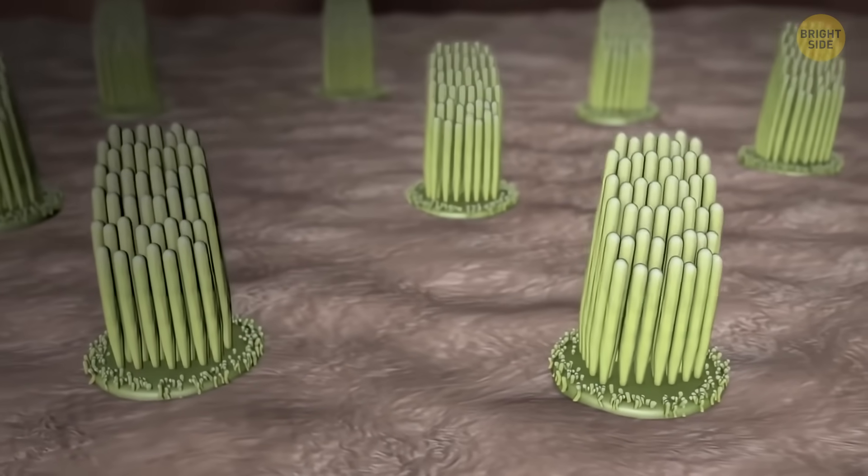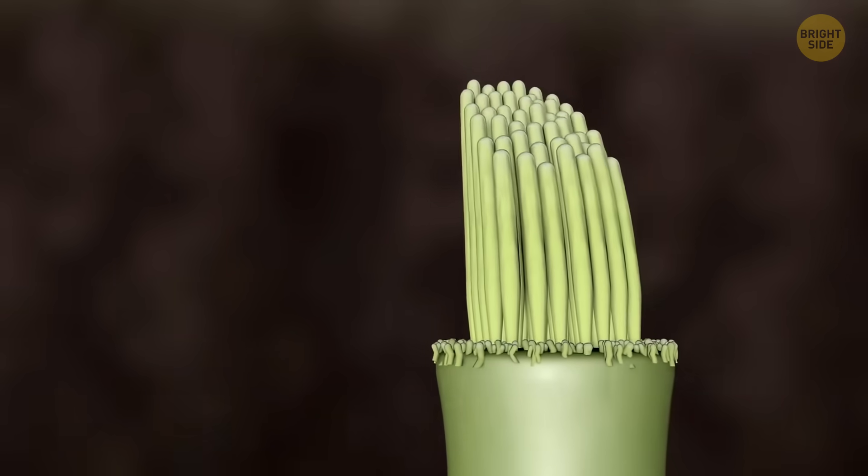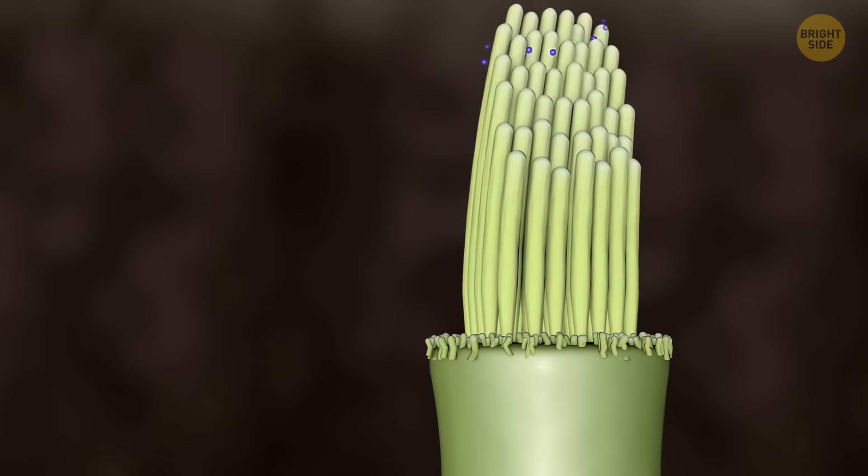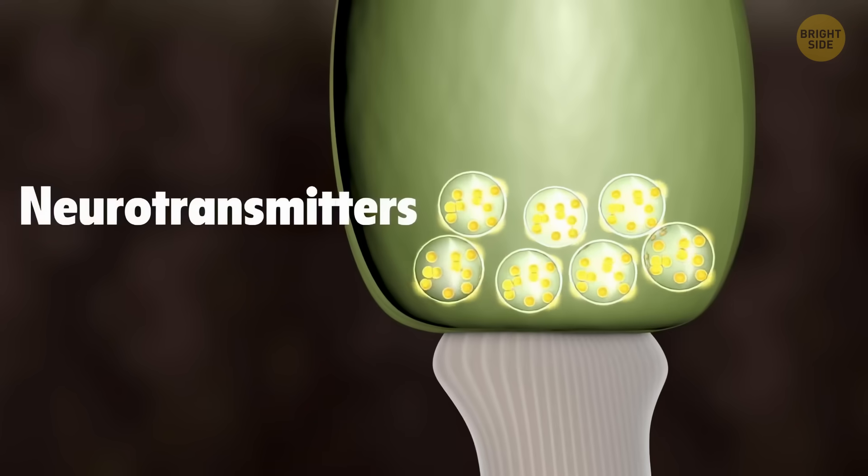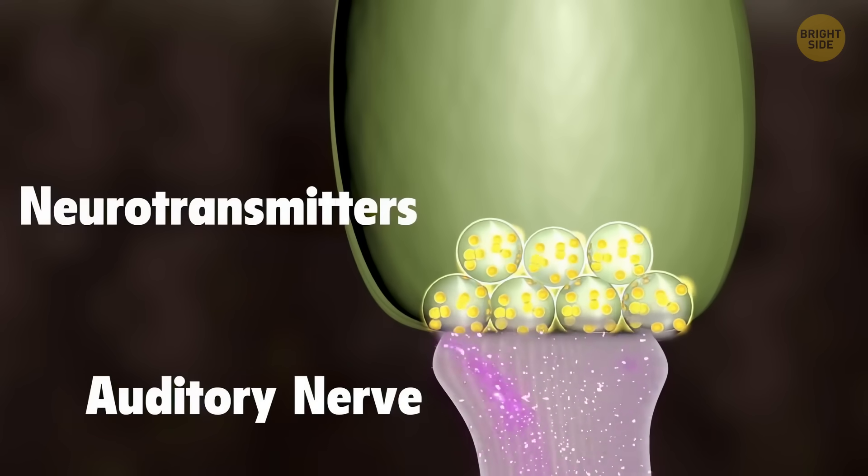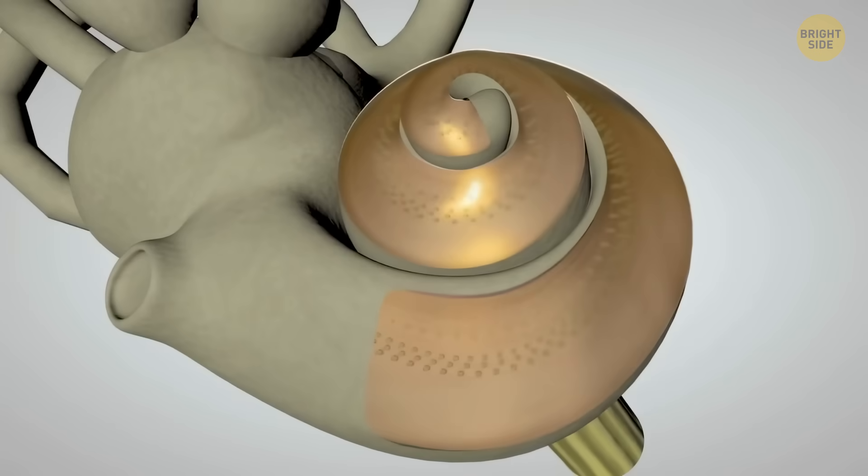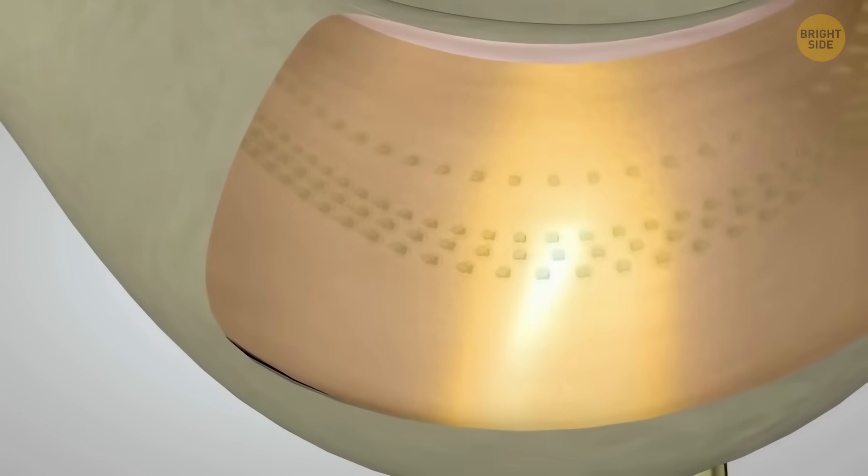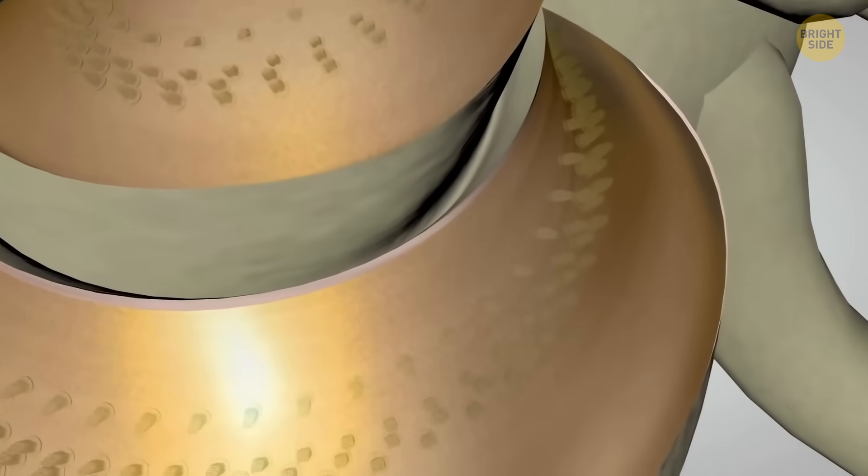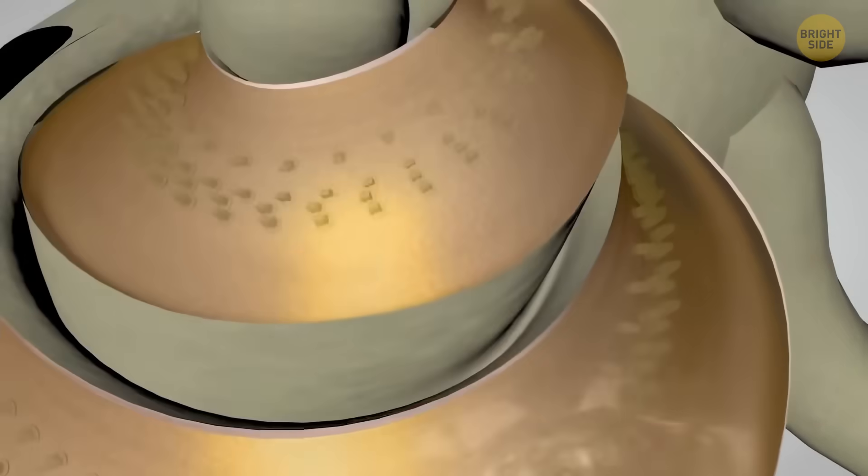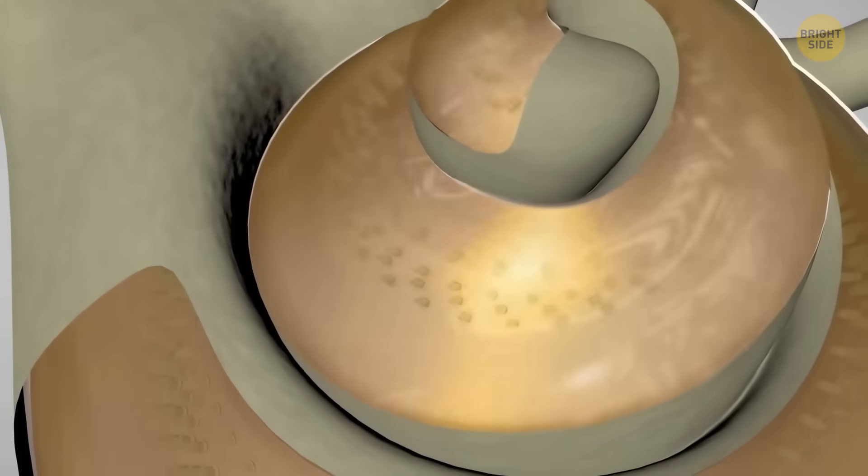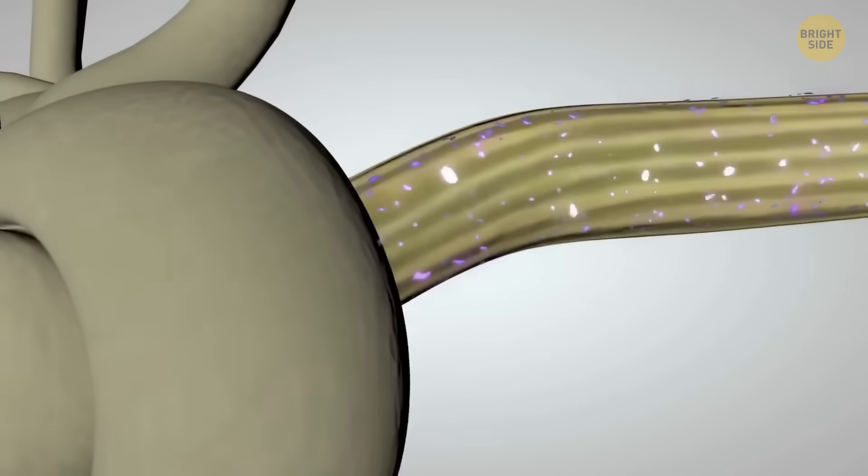Now, we already knew that certain parts of these hair cells can boost those signals with a well-timed kick to make the sounds clearer, kind of like a built-in amplifier. But now, it looks like the ear has another trick up its sleeve. It can also tune and boost sound more broadly, especially for low-frequency sounds. And it does this without making up fake sounds or overreacting.